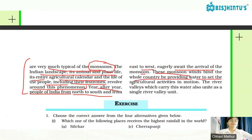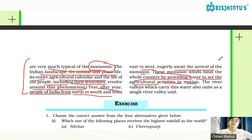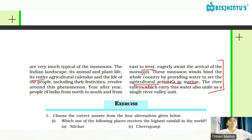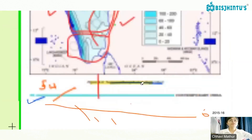Without water, agricultural activities cannot function. The majority of India's agricultural sector depends on rainfall. The river valleys which carry this water also unite as a single river valley unit. With this, we complete the topic of 'Monsoon as a Unifying Bond' and the rest of the chapter.